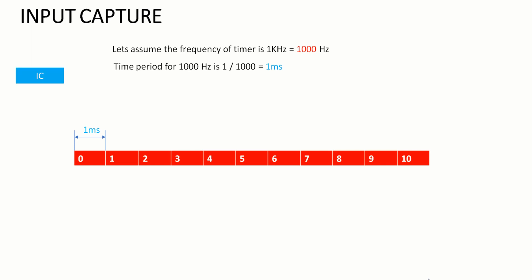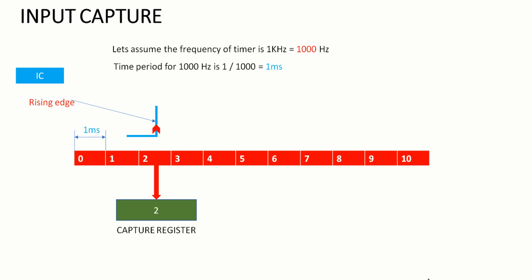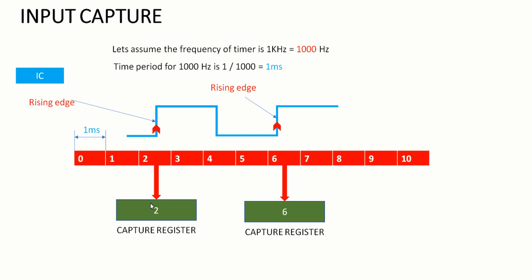In the input capture module, the microcontroller has an input capture pin. Whenever a rising edge pulse is given to that pin, the current timer count value is stored in a register called the capture register. For example, here the rising edge occurs at count value 2, so 2 is stored in the capture register. On the next rising edge, the timer count value at that moment is again stored to the capture register, giving us two consecutive capture values.